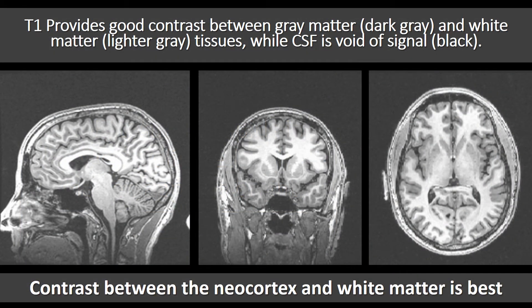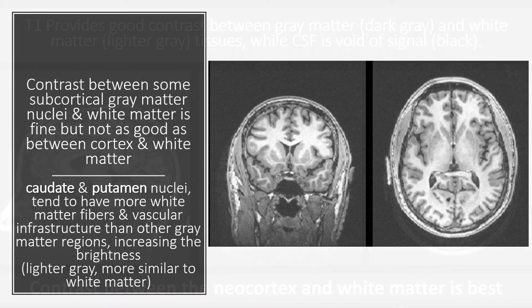T1 provides good contrast between gray matter (dark gray) and white matter (lighter gray) tissues, while CSF is void of signal (black). Contrast between the neocortex and white matter is best. Contrast between some subcortical gray matter nuclei and white matter is fine but not as good as between cortex and white matter.